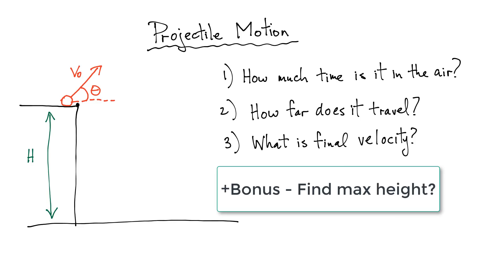We're going to use the same parameters as before. My initial velocity is going to be 20 meters per second. The angle — let's give it some arbitrary angle — let's say 25 degrees. And the height of the cliff that I'm launching the projectile from is going to be 15 meters.